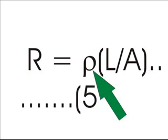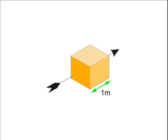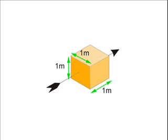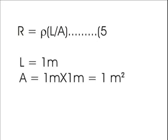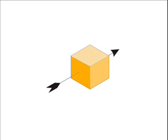To determine the nature of the constant ρ, let's imagine the conductor has length L equal to 1 meter and cross-sectional area A equal to 1 square meter. That means the conductor becomes a cube whose edges are each of length 1 meter. Putting the values L equals 1 meter and A equals 1 meter square, then R equals ρ. Hence, resistance of a material of unit length having unit cross-sectional area is defined as the resistivity or specific resistance of the material.